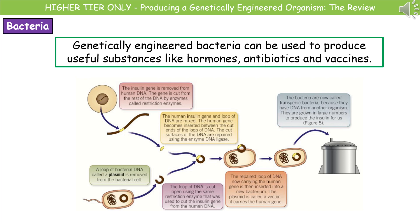If they give you a higher mark question on this topic, you'll need to go into more detail than just those three basic steps. In the diagram at the bottom, you can see all the detail you could possibly be asked for on anything up to a six-mark question. We start by identifying the gene that codes for our desired characteristic, then remove that gene from the donor organism.